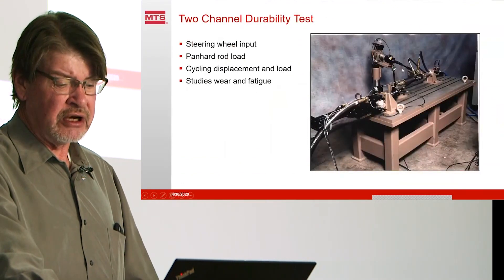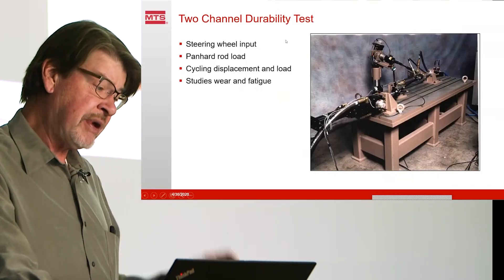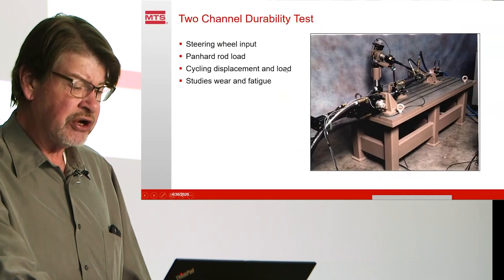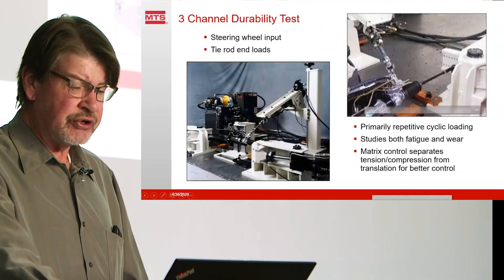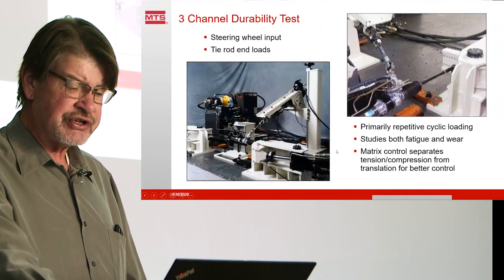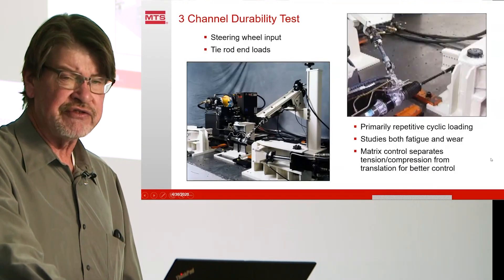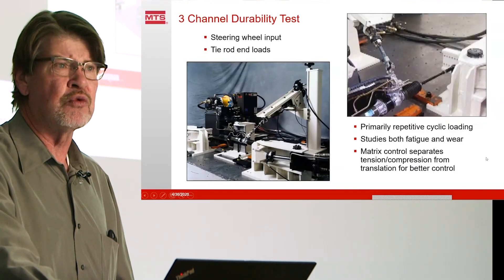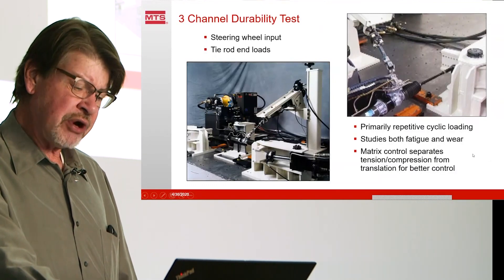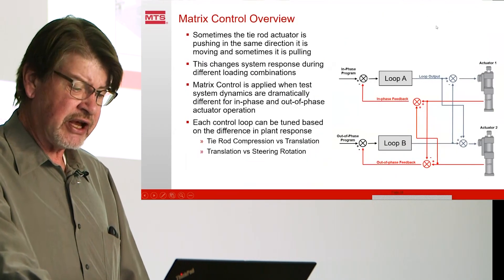Here we want to look at a more complete steering system — the steering gear assembly. Here's an example of a panhard rod load dynamically applied onto a recirculating ball gearbox, with a steering wheel input and tie rod end loads in a cyclic A-B comparison sort of test. It's not real-time data but it allows repetitive simulation of an exact scenario to study wear or fatigue. We have to separate tension-compression from displacement in order to get good control on a test like this.